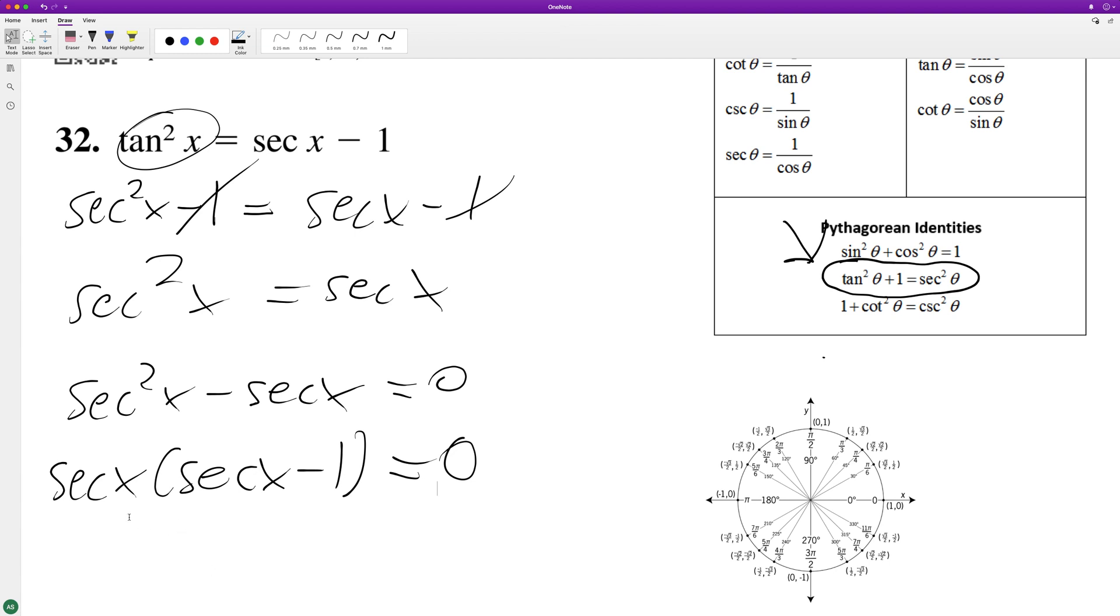There's no solution for secant x equals 0, but secant x minus 1 equals 0 has a solution. It has to be positive, so it's just going to be equal to zero.